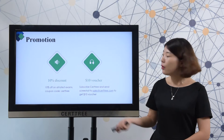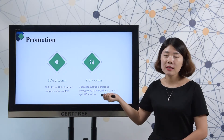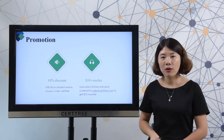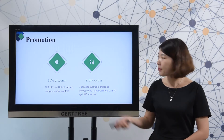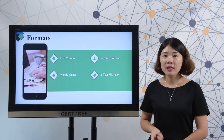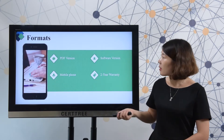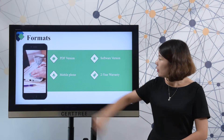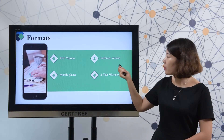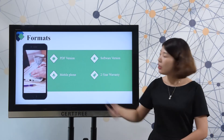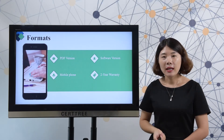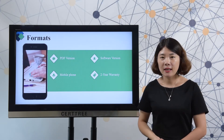Furthermore, you can get an additional 10 USD voucher code to save more if you subscribe to us. Search Tree offers multiple formats for you. You can choose PDF version or software version. You can use both versions on your mobile phone. It is very easy and convenient.